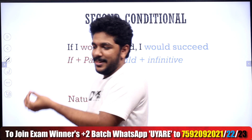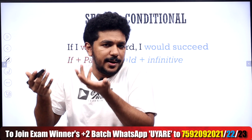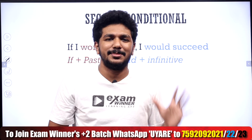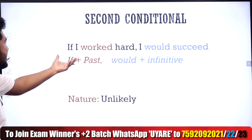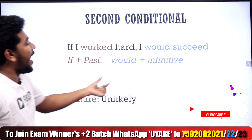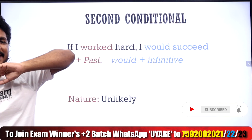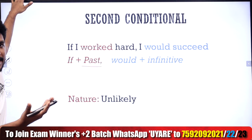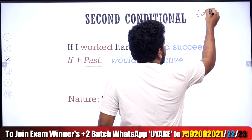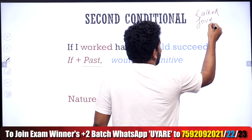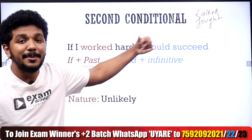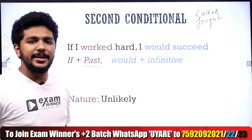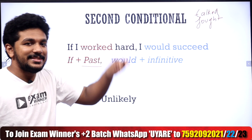The First Conditional is simple: if there is a present tense verb in the if clause — talk, walk, smile — then the main clause uses 'will plus infinitive'. That base form is easy. In the Second Conditional, let's examine: If I worked hard, I would succeed. The if clause uses simple past — work becomes worked, talk becomes talked, fight becomes fought. You can search for a simple past tense verb table on Google.